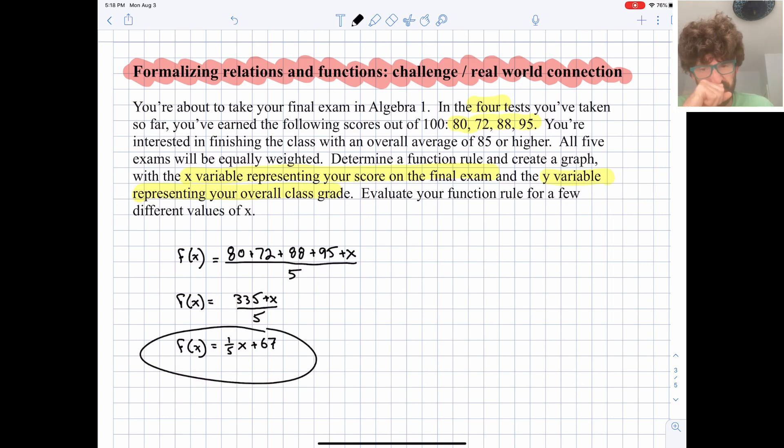f of x equals one-fifth x plus 67. The 335 divided by five gave us the 67. So it would be our final function equation, our final function rule. I'm going to actually graph this on Desmos in a second, but let's think about what this means.